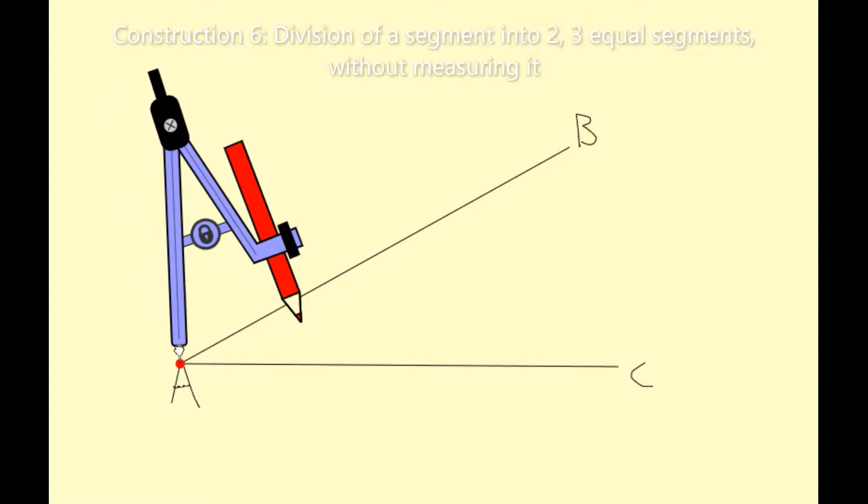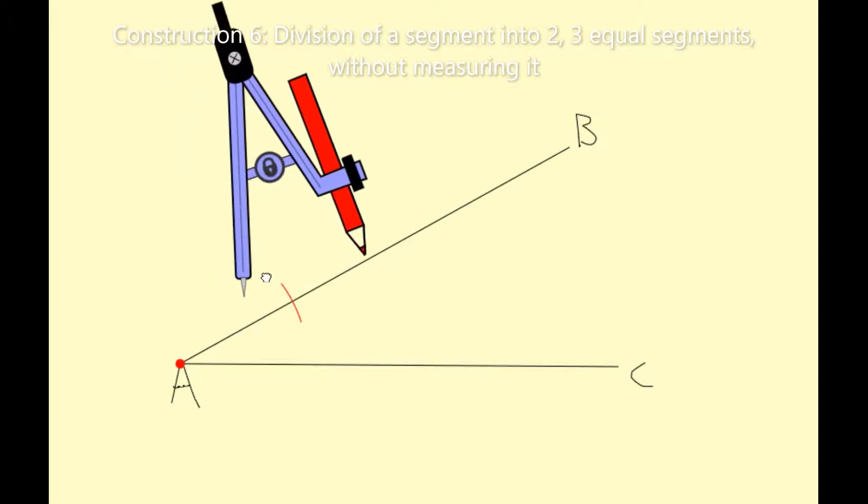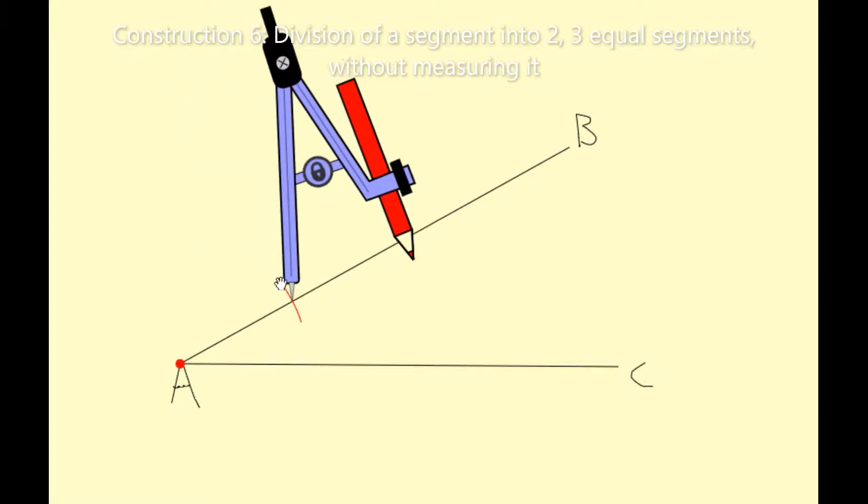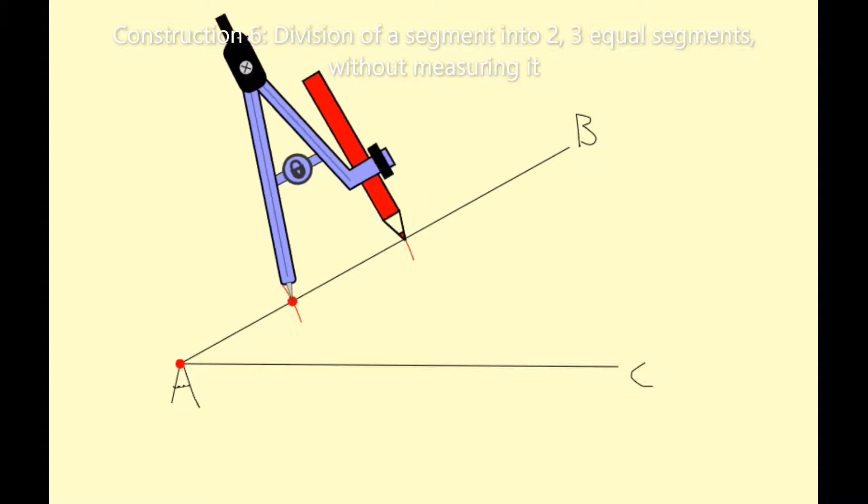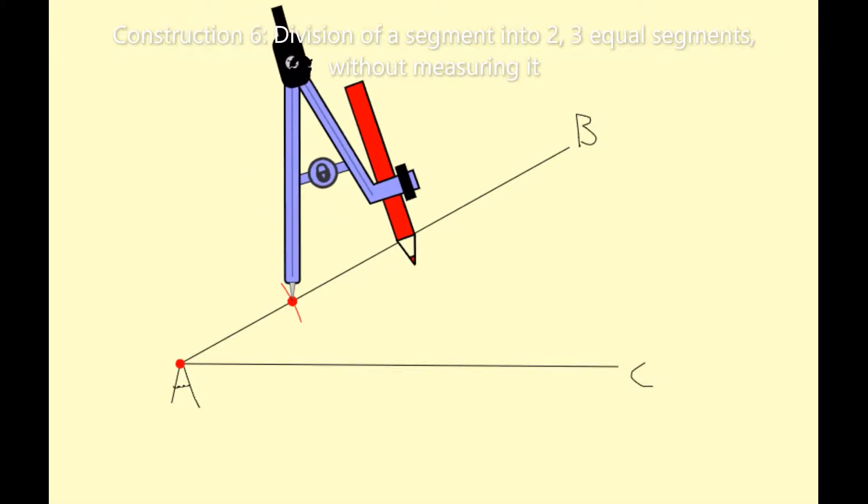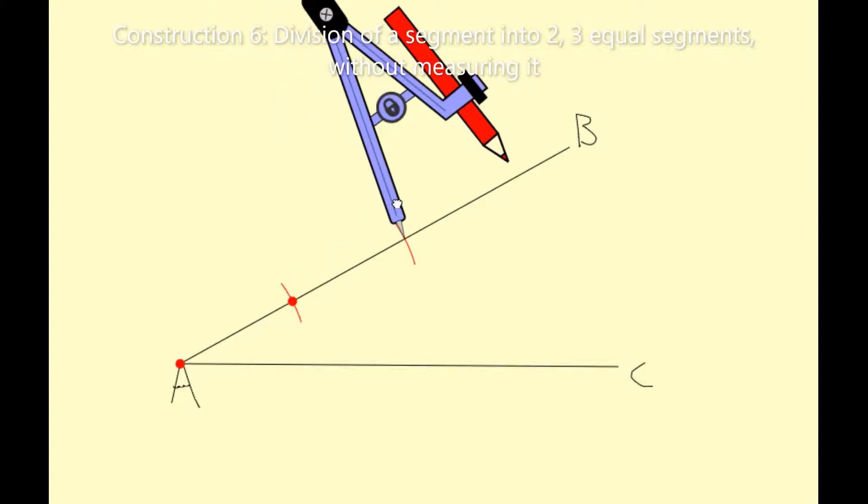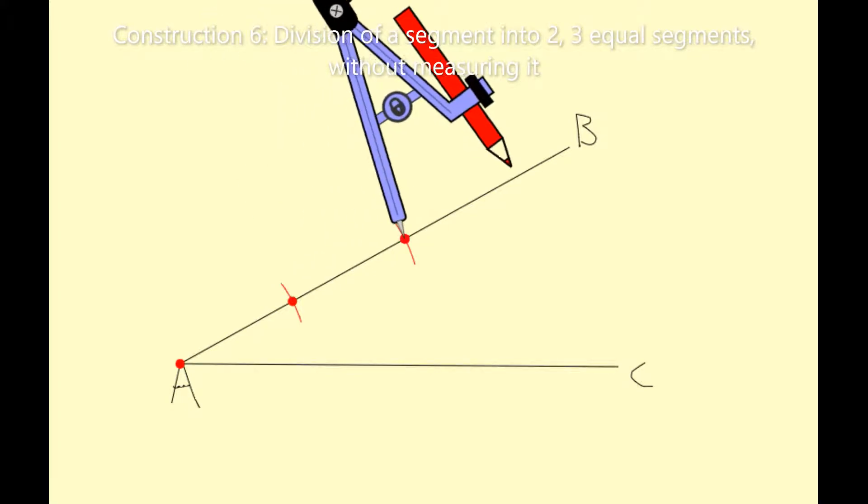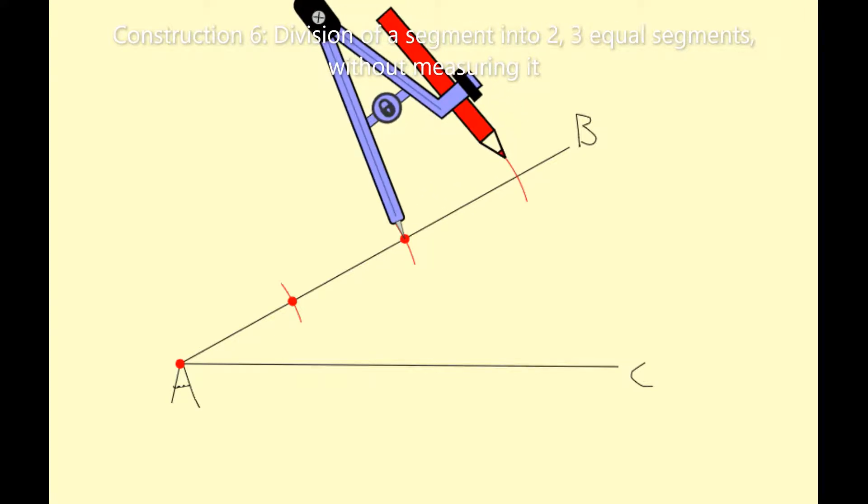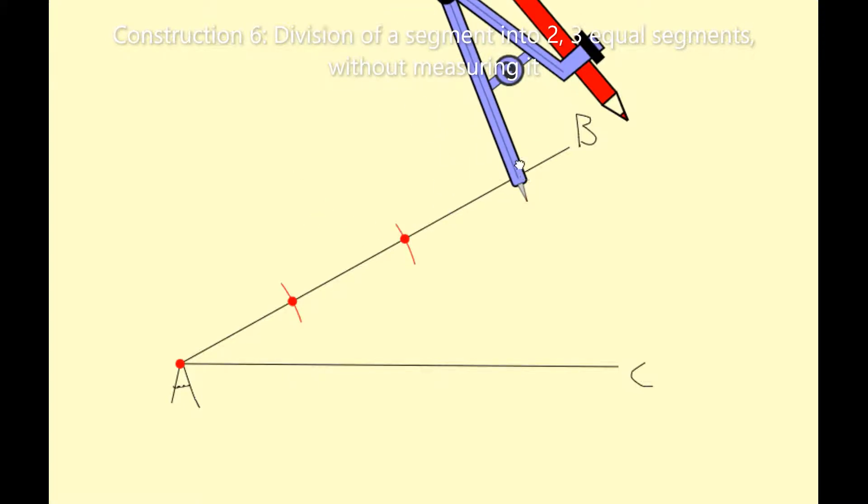I'm then moving the nib of my compass to that arc where it intersects the line segment AB, and I'm going to draw my second arc. So I'm dividing this into three segments. There's my second one. I'm moving the nib of my compass to my second one and I'm marking my third arc. So there are the three arcs. I'm now going to put away my compass. I'm just going to put a dot at that last one, and I'm going to use my ruler now and my set square.